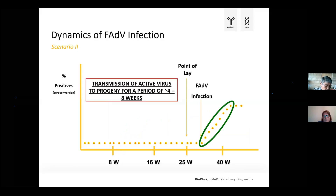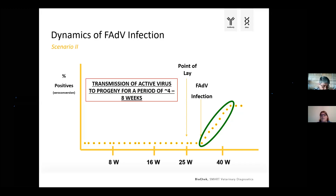Once infected during lay, there will generally be a period of four to eight weeks where the virus is actively shed until all breeders seroconvert and have high levels of neutralizing antibodies. While shedding, there is vertical transmission of active virus to the progeny, which will cause issues in the progeny.